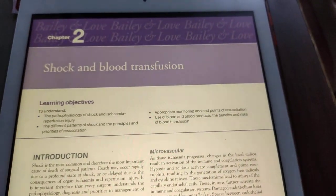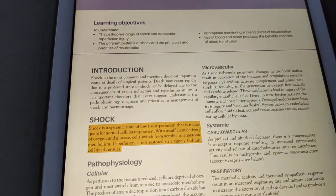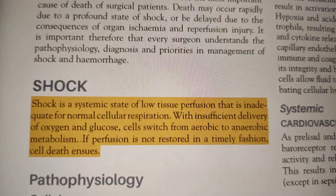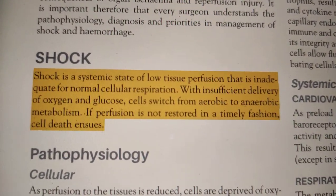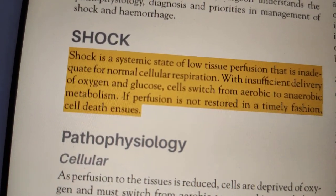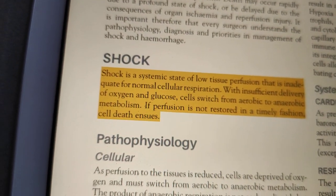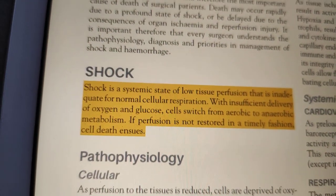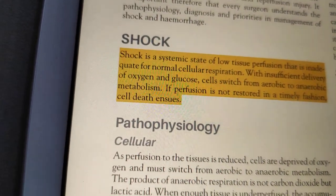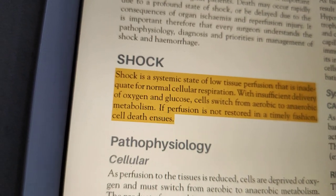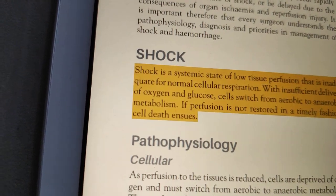Now let's talk about chapter 2 on shock and blood transfusion. First, you must know the definition of shock. Shock is a systemic state of low tissue perfusion that is inadequate for normal cellular respiration. Due to this decreased cellular respiration, the body will switch to an anaerobic mechanism which will produce lactate, and if glucose runs out then ATP generation is altered and cell death ensues.